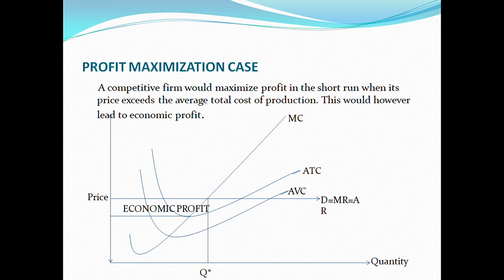However, in the short run we say that a competitive firm maximizes profits when its price is more than its average total cost of production. If it costs me 10 naira to produce a particular item and I'm charging 20 naira for it, obviously my price exceeds the average total cost of production and this will lead to economic profit for the business.